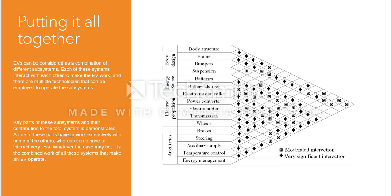To put it all together, you have four components. The first is the body design, which includes the body structure, frame, bumper of the car, and suspension. These are four different categories that are embedded in the body design and use some sort of electric modulation within the system.